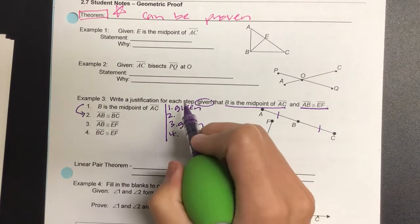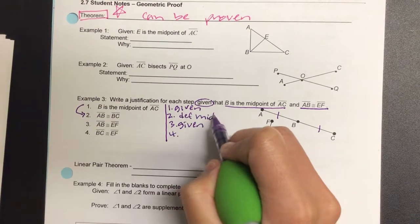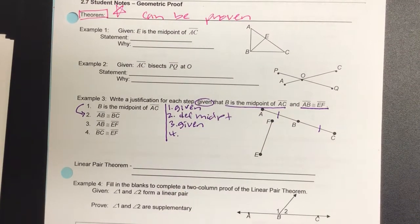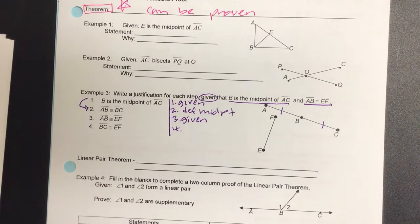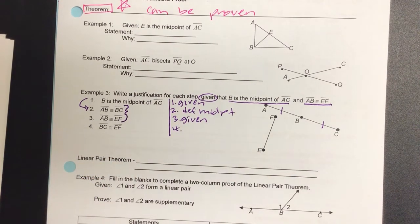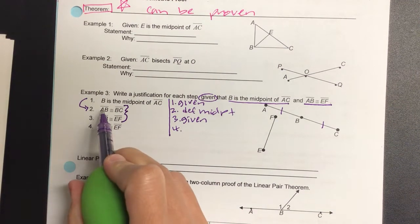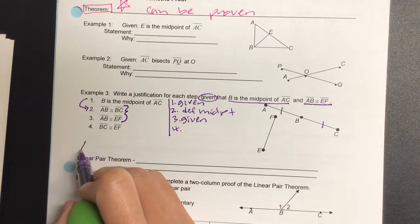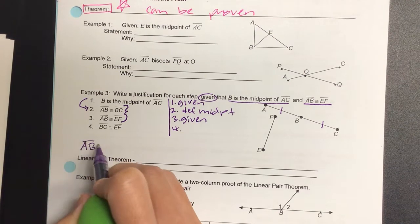And then I want you to wrap something up. The most often used property that we mentioned was what? Transitive property. So I'm going to actually write this out. The two that I bracket, write this off to the side: AB is congruent to BC.